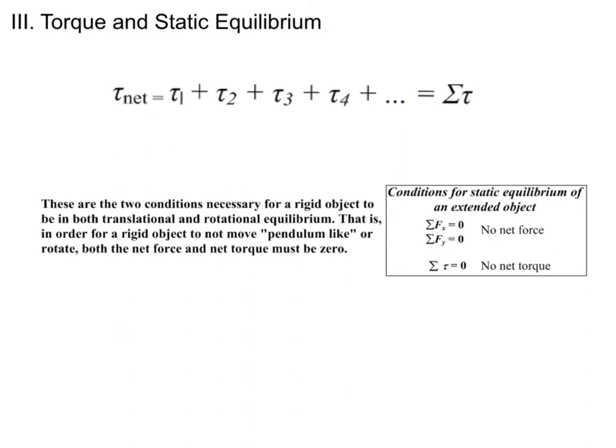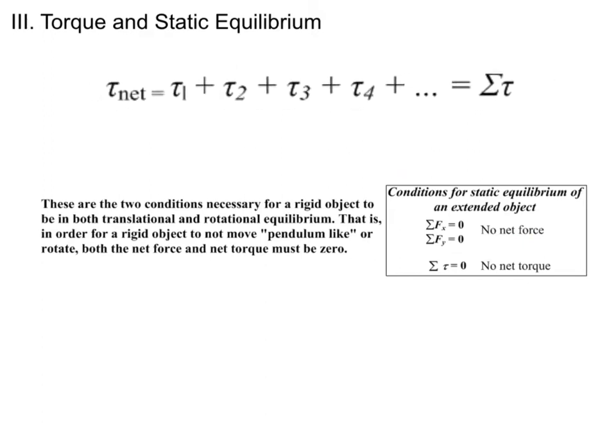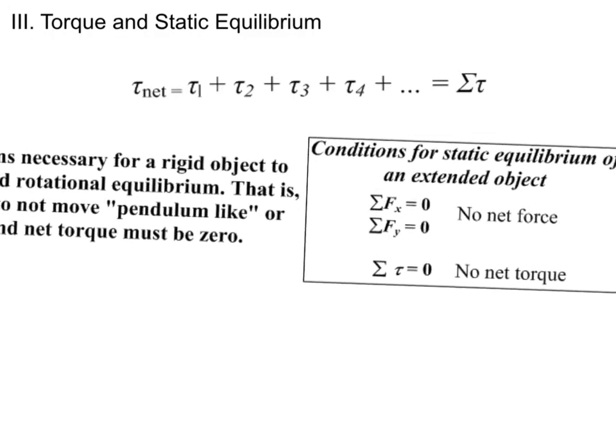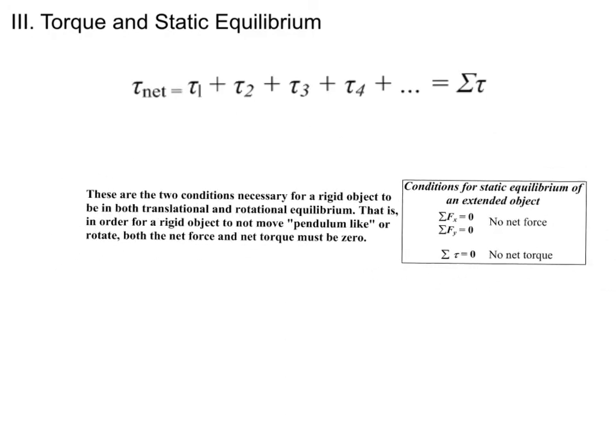When forces act and result in torques, those torques can add up to a net torque. The conditions for static equilibrium are no net force and no net torque — those are the two conditions necessary. For a rigid object to neither translate nor rotate, both the net force and the net torque must equal zero.